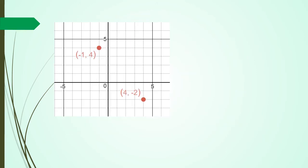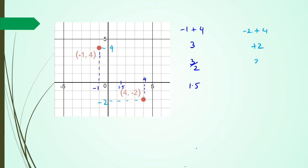What if we start throwing in negative numbers? It doesn't matter — it's still the same idea. For the x coordinates I've got negative 1 and 4. Negative 1 plus 4 is 3, and 3 divided by 2 is 1.5, so 1.5 is the x component. For the y component I've got positive 4 and negative 2. Negative 2 plus 4 is positive 2, and 2 divided by 2 is 1.